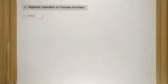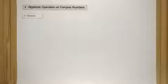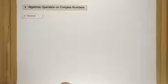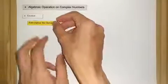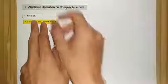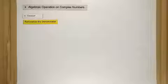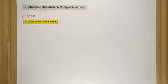Let's do division on complex numbers. We don't simply divide complex numbers as we do for real numbers. The trick when dealing with complex numbers is what we call rationalizing the denominator. The best way to learn about this is through an example.